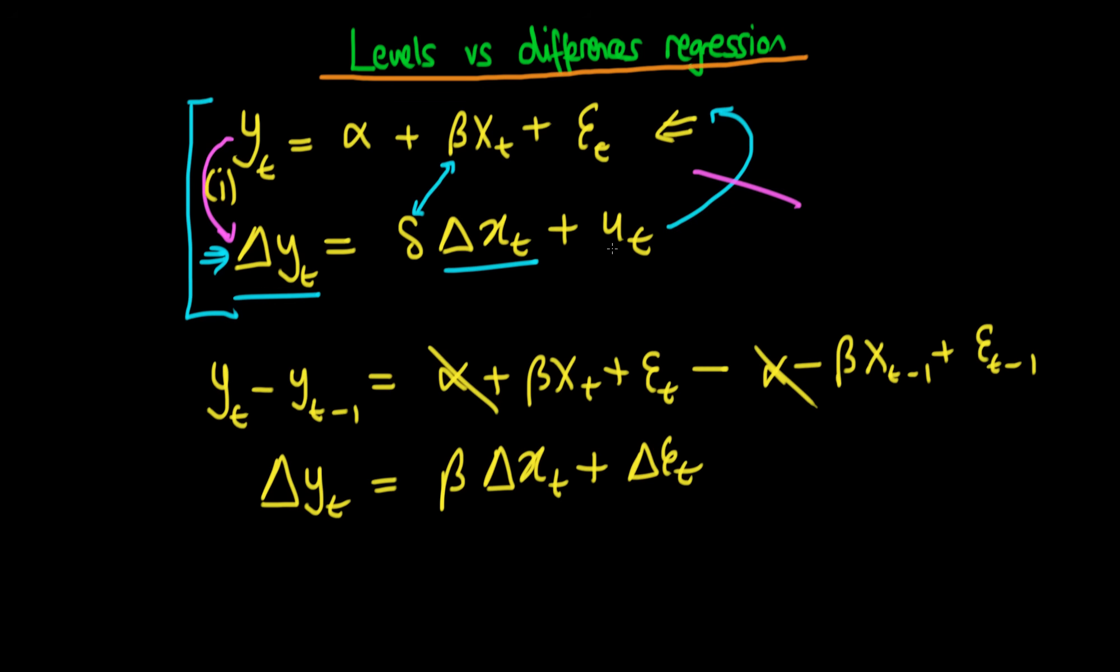And the reason behind this essentially is due to this error term here. Because if there is some consistent error between, well if xt changes and then yt changes by a fixed amount which is given by delta times the change in x plus some random quantity ut...